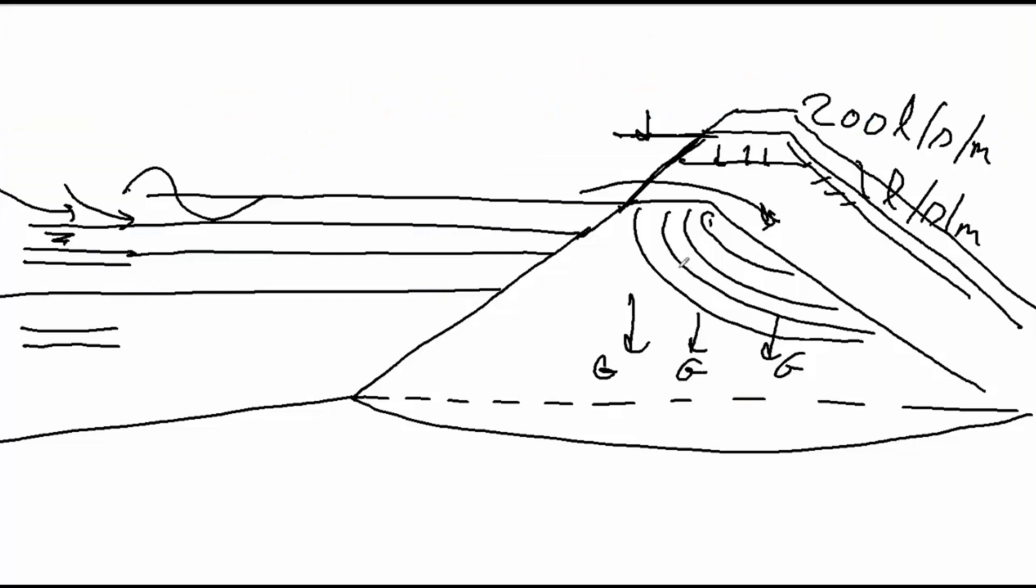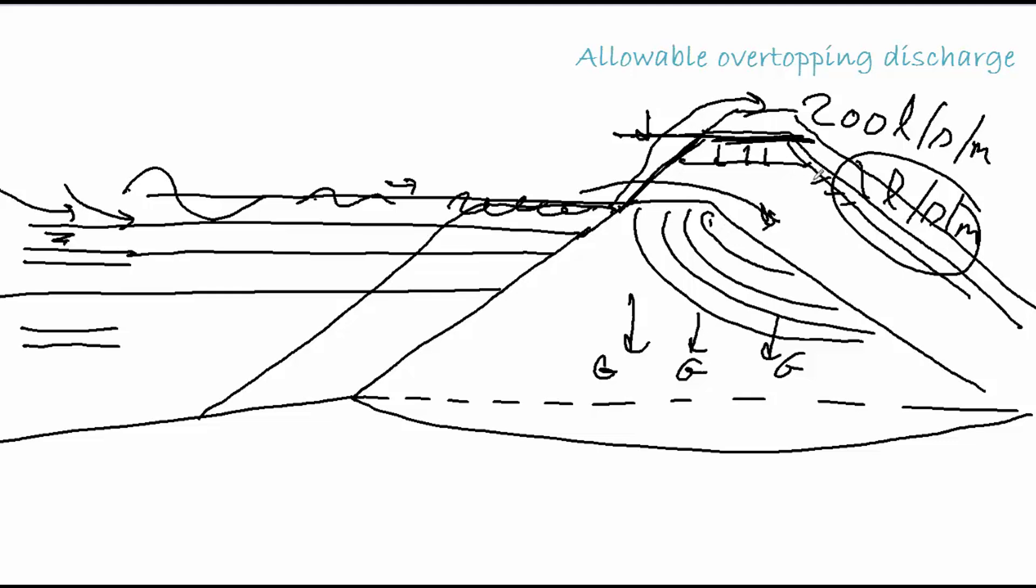The height of a dike can be lower if the waves are dissipated. You can do it by constructing an outer berm, so in front of the dike here. So, the waves that are coming in will break here. The wave energy will dissipate, so it will reduce the amount of water going over the dike. So, this means that to reach the same allowable overtopping discharge, you can lower the crest height of a dike. So, you can save this part, save cost, because you have less height.